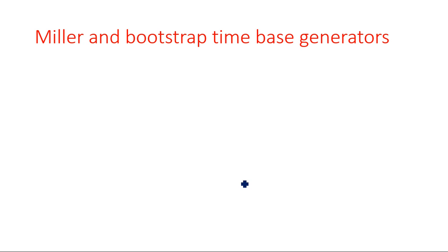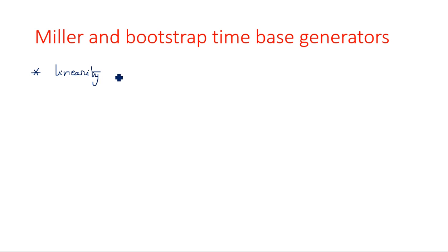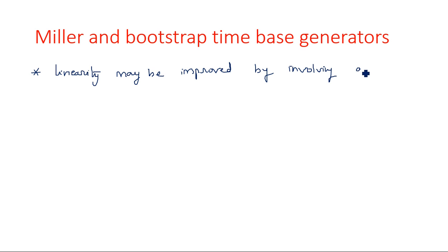We know that in time-based generators we should create a sweep circuit that should give very low slope error, or we can say a linear output voltage. So in order to get the linearity of the time-based waveforms, that linearity may be improved by involving feedback.